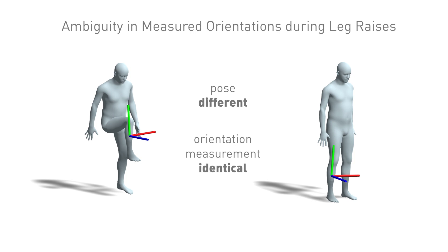Hence, inferring the upper leg's orientation from the lower leg alone is ambiguous.